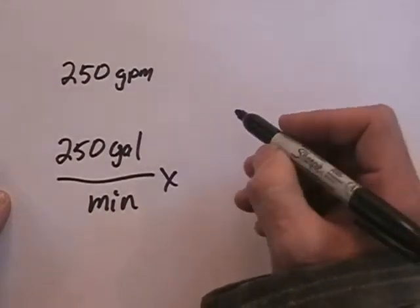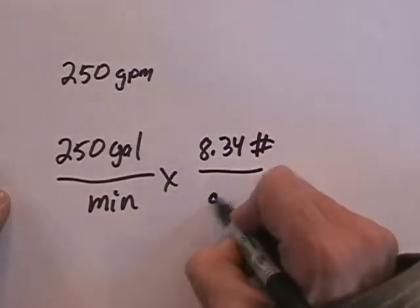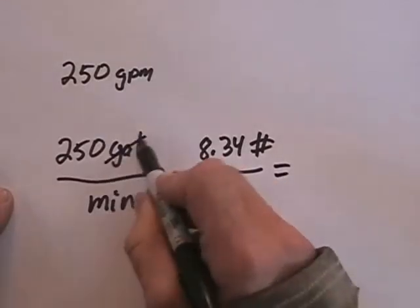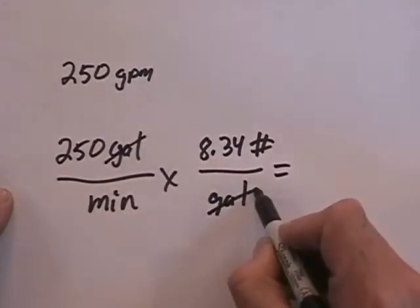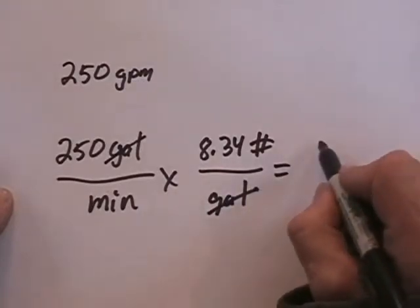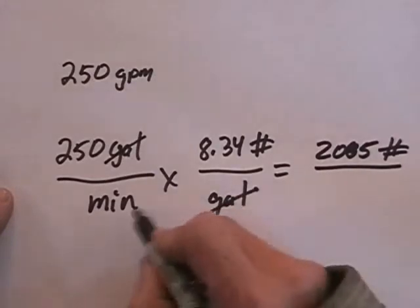So what we're going to use is the constant of 8.34 pounds per gallon in order to change this over. We've got gallons over gallons, which cross out, and we're left with 250 times 8.34 pounds, which comes out to 2085 pounds per minute.